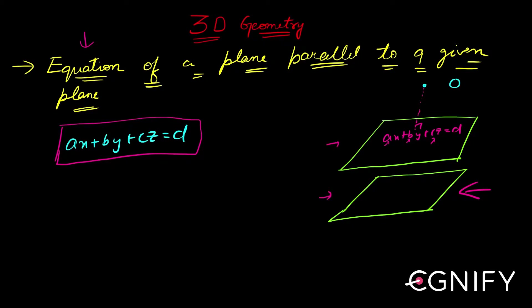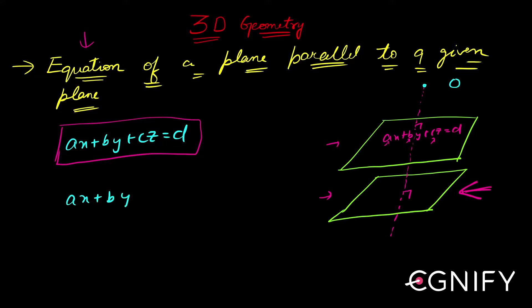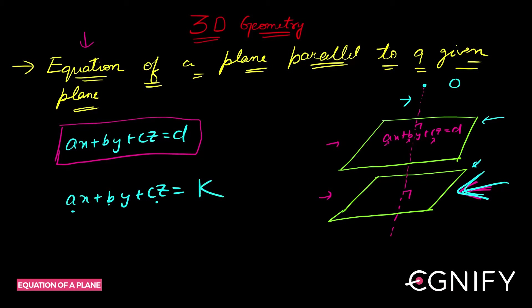If these two planes are parallel, then the same line will be perpendicular to both planes. So if I write the equation of the other plane, it will also be of the form ax + by + cz, because the DRs of the normal to this plane are also a, b, c — the same normal passes through both planes.